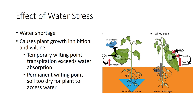As soil dries further, the plant becomes even more water deficient. The plant begins to lose water faster than it can be absorbed, and it temporarily wilts. At this temporary wilting point, the plant recovers when conditions improve — wetter soil, cooler soil, a more humid atmosphere, shade, or less wind help the plant recover. Although the plant recovers, episodes of water stress reduce growth and yields.